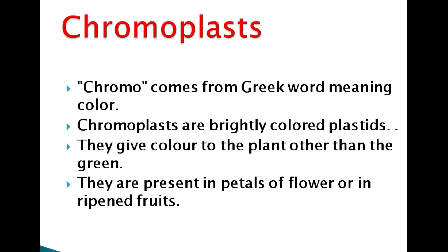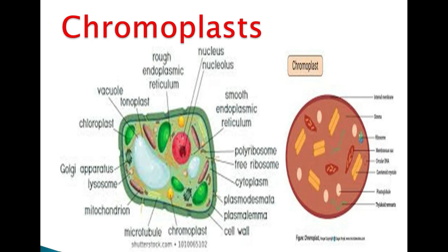Chromoplasts are present in the petals of flowers or in ripened fruits. You can see the structure here — these are plastids in yellow form present in plant cells. Those that give non-green color, such as yellow or red, are known as chromoplasts.